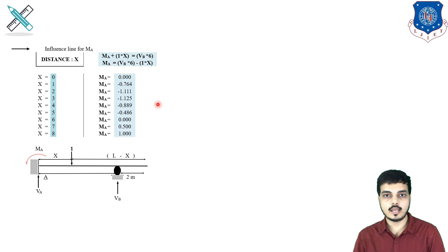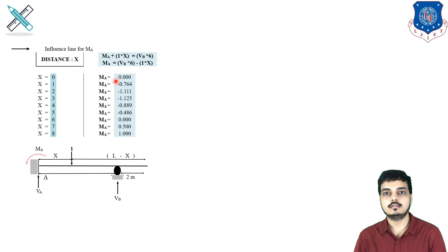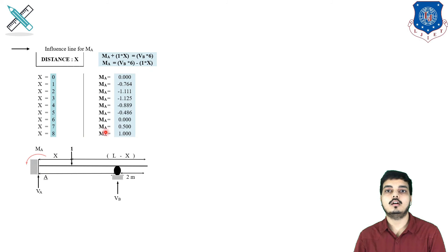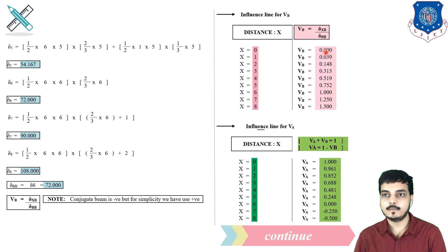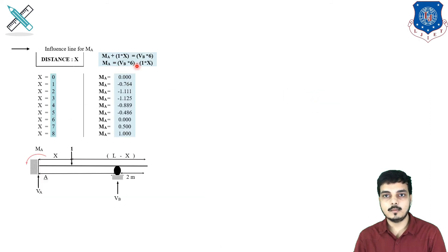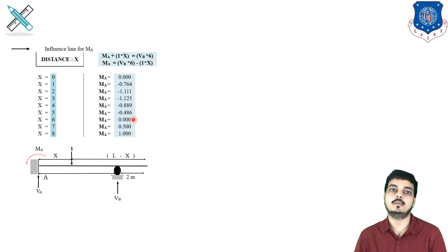Next we find MA. The moment relation is: MA + 1×x = VB×6, so MA = VB×6 − 1×x. For example at x=6: MA = 1×6 − 1×6 = 0. Substituting each VB value and corresponding x, we can find all ordinates of the ILD for MA.